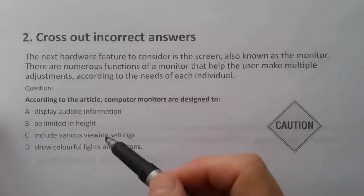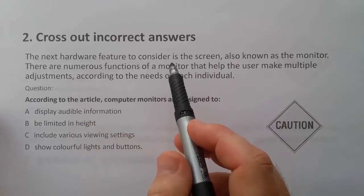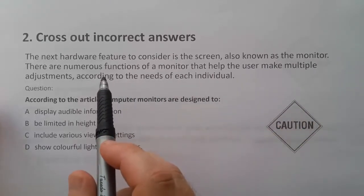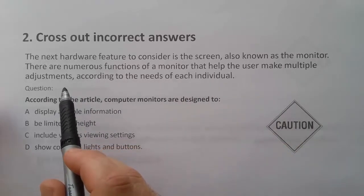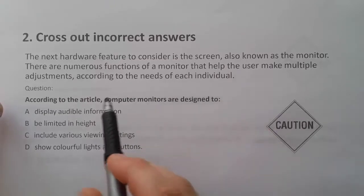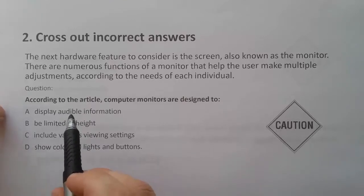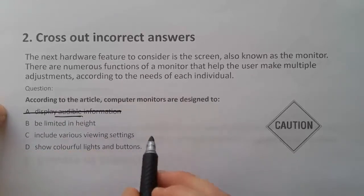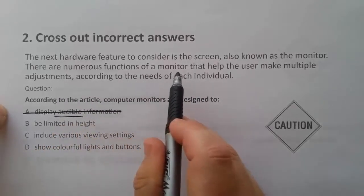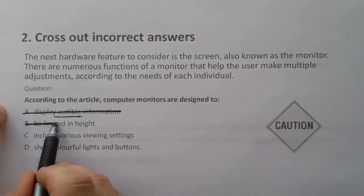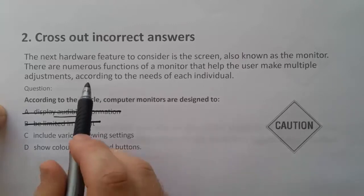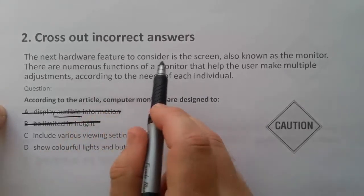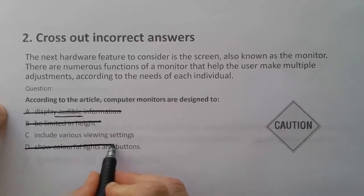Another important strategy we've already demonstrated is crossing out incorrect answers. Here's an example: 'The next hardware feature to consider is the screen, also known as the monitor. There are numerous functions of a monitor that help the user make multiple adjustments according to the needs of each individual.' The question asks what computer monitors are designed to do. 'Display audible information' — audible means something you hear, so no, cross that out. 'Be limited in height' — nothing about limitations, cross that out. 'Include various viewing settings' — various functions, multiple adjustments — that looks good. 'Show colorful lights and buttons' — nothing about that, cross it out. So the answer is C.